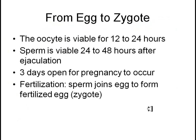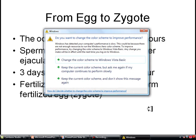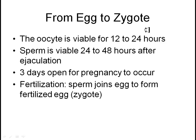The oocyte is available and viable for 12 to 24 hours. Sperm can live a couple of days, so basically you have a three-day window for pregnancy. If you're around day 14, which would be the typical ovulation day in a perfect cycle, then you're open for pregnancy a couple of days before that, maybe a day after.